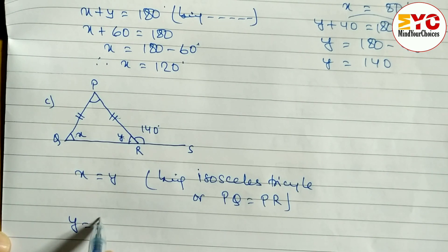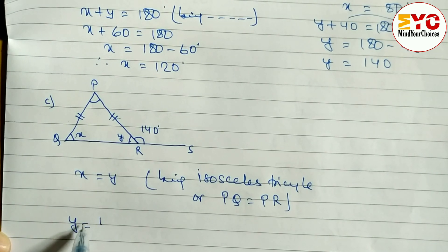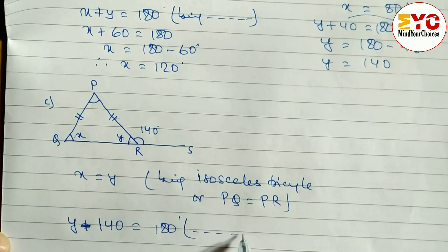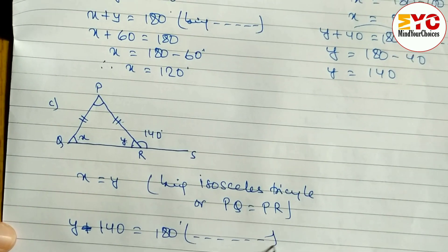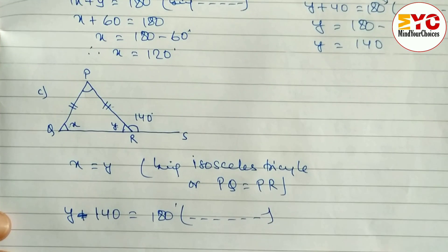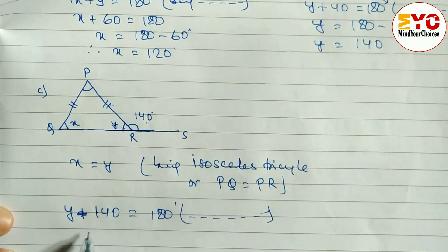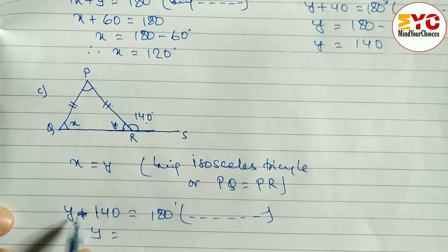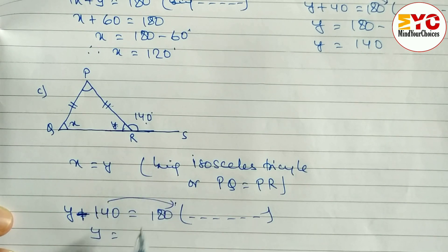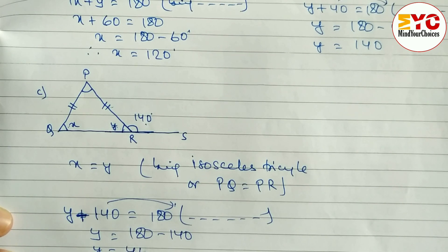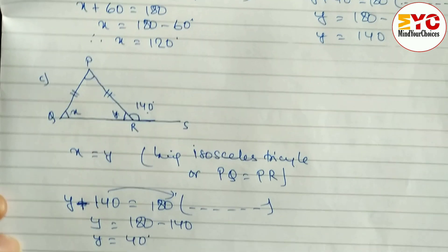Now find out the value of Y. Y plus 140 is equal to 180 degrees. The reason: being a straight angle, being supplementary angles, or being a straight line. Y plus 140 is equal to 180 degrees. Now Y is equal to — we take 140 to the right side — so we write 180 minus 140. Y is equal to 40 degrees when you subtract.